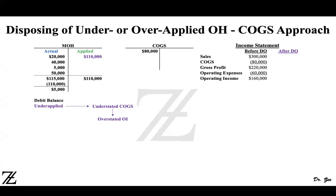Here is some data provided. If you want to know how to get the actual balances in the MOH account or the applied balances, there is another video that covers general entries and everything regarding underapplied and overapplied overhead. You can watch that video. Otherwise, assume that these amounts are given. In this video, we are only going to use the overallocated or underallocated overhead to cost of goods sold. I assume that you know the process of how to calculate manufacturing overhead applied, overapplied, or underapplied.